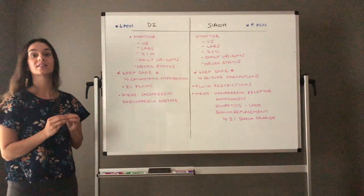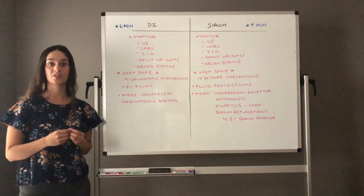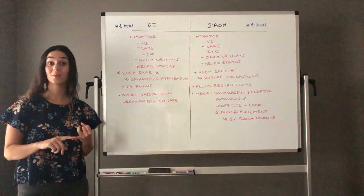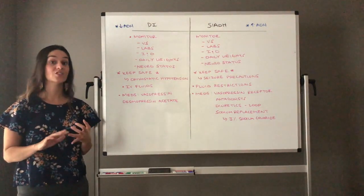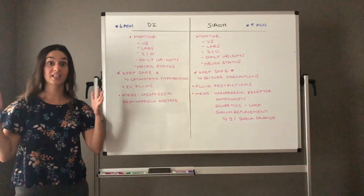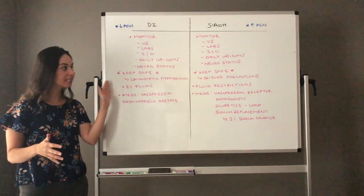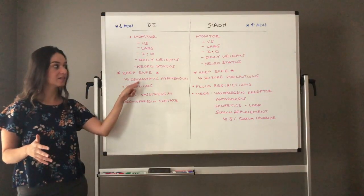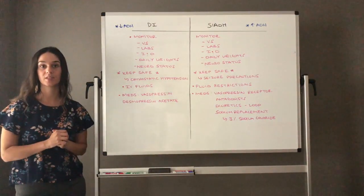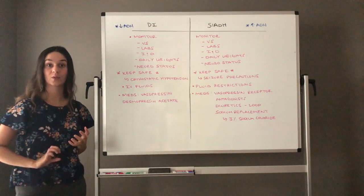Keep safe. For diabetes insipidus, when I think keep safe, I'm really thinking about that orthostatic hypotension. I'm really thinking I need to help them if they need to get out of bed. I need to educate them to change positions slowly. I need to make sure they sit down quickly if they feel dizzy or lightheaded. So make sure to keep this client safe. And when I think safety for DI, I think orthostatic hypotension.